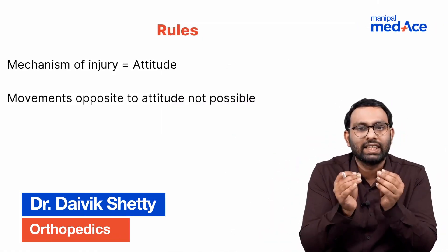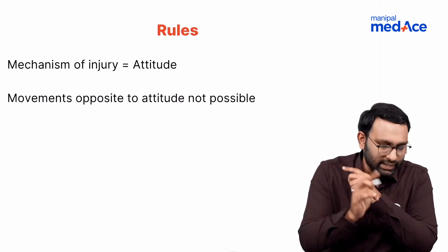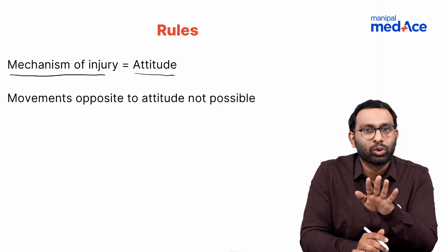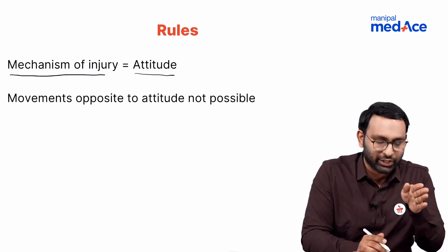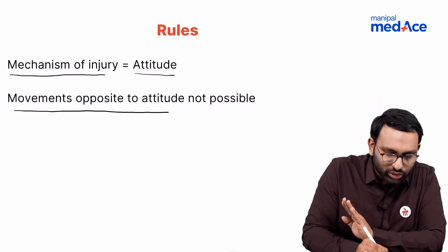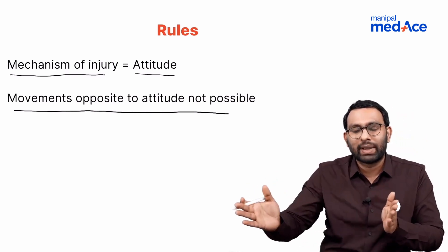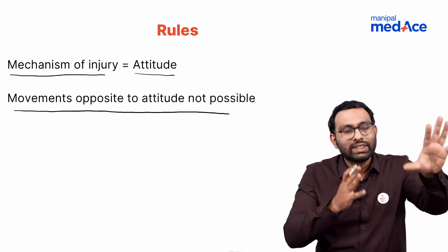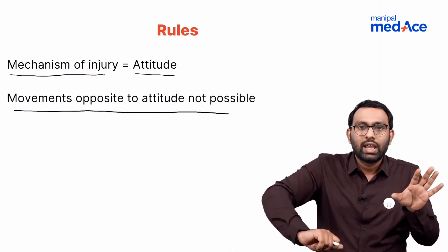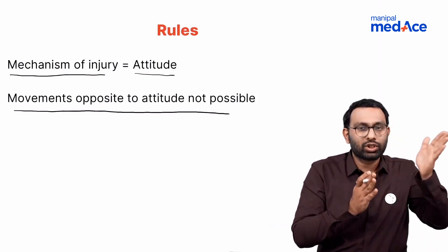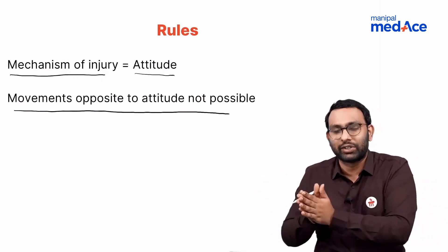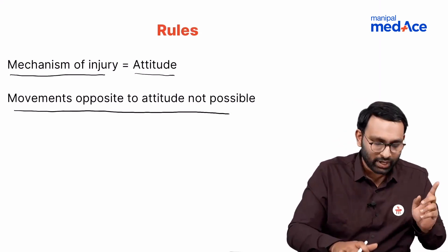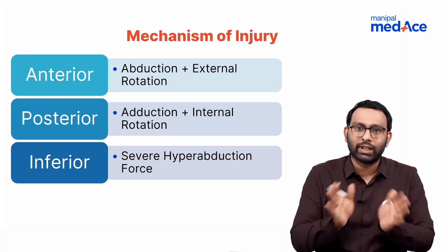For shoulder dislocation, I have two rules. Rule one: the mechanism of injury is equal to the attitude. Rule two: movements opposite to the attitude are not possible. The attitude is how the affected limb is presenting when a patient walks into the casualty — whether it is in rotation or abducted. If you haven't understood these rules yet, wait for the next slide where everything will become clear.